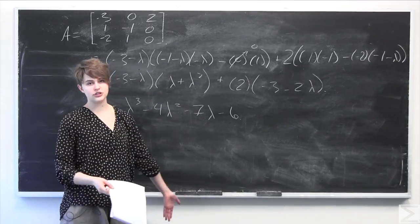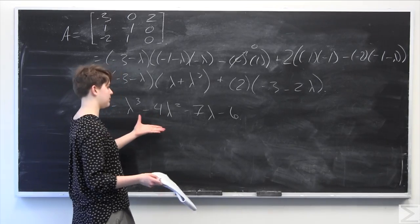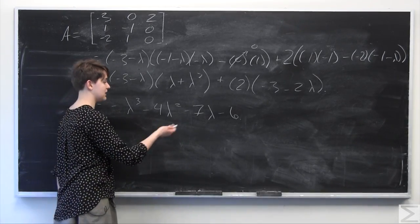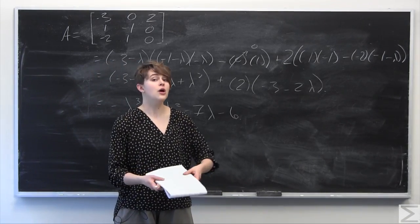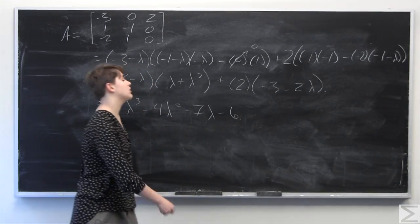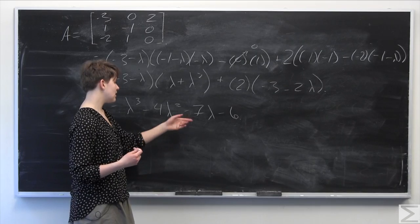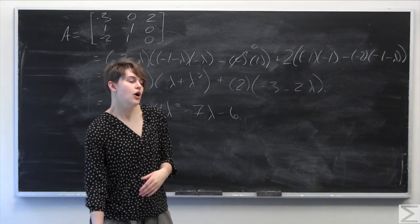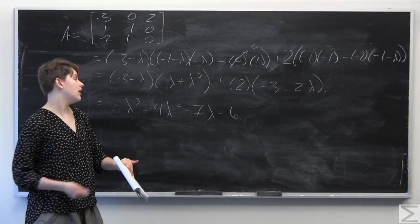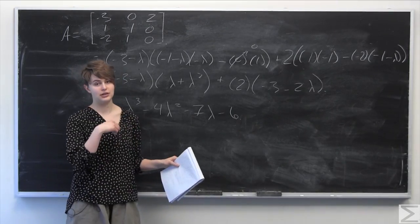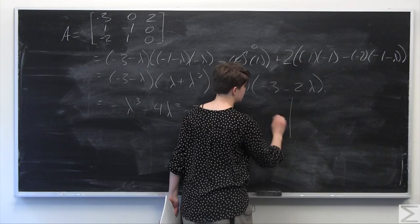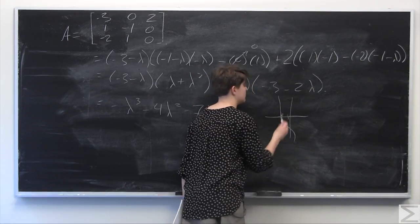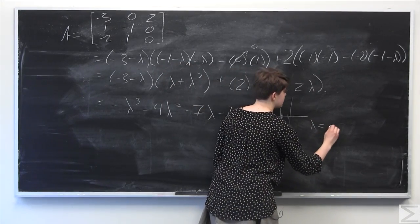It's not immediately clear how to factor this characteristic polynomial. A good approach is to graph it on a calculator — plug in negative lambda cubed minus 4 lambda squared minus 7 lambda minus 6 to find any real roots. Graphing shows this function crosses the x-axis at x equals negative 2, so lambda equals negative 2 is a root, meaning we can factor out the factor lambda plus 2.